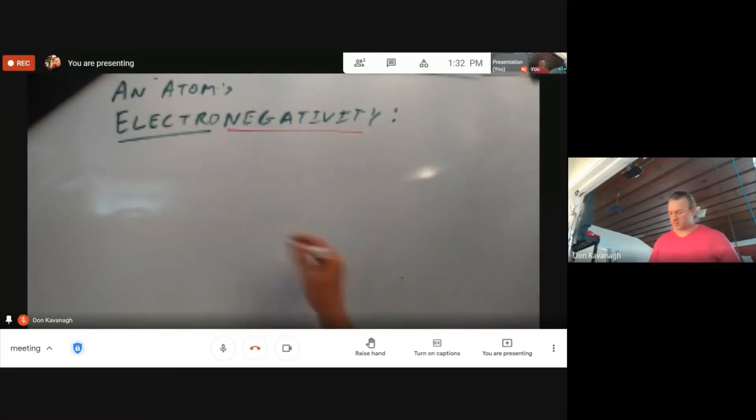Here are two spheres that represent any two atoms involved in a covalent bond. Let's say there are electrons right here in the middle of those two atoms.